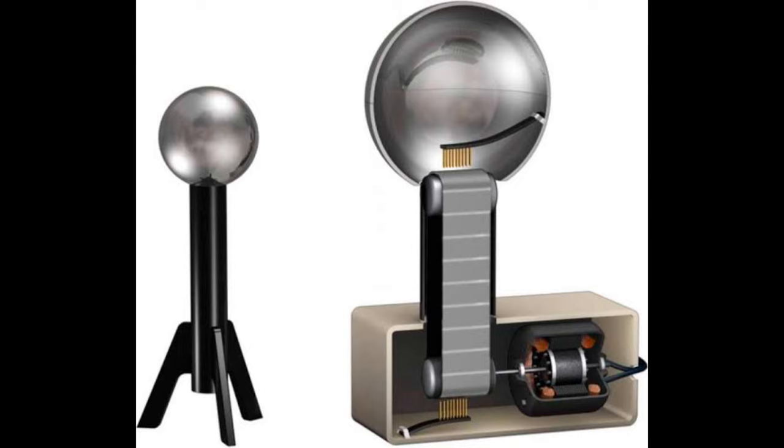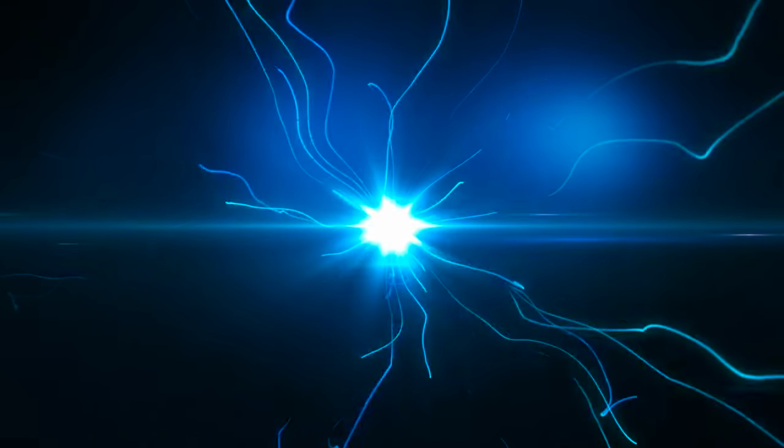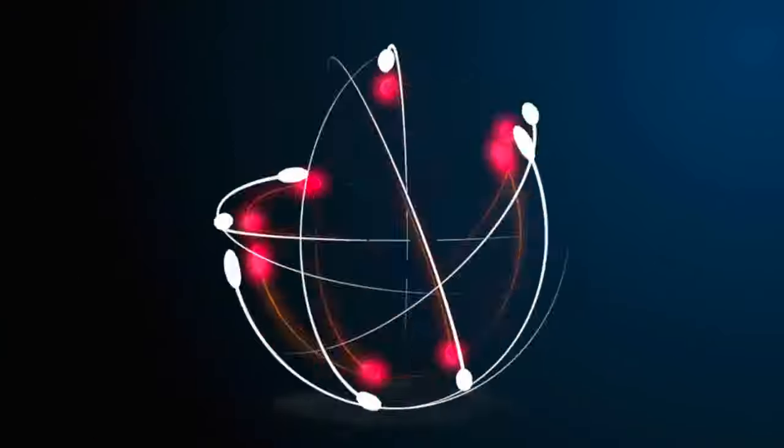Van de Graaff generator, high voltage generator. In 1931, R.J. Van de Graaff designed an electrostatic generator capable of generating very high potential of the order of 5 million volts, which was then made use of in accelerating charged particles so as to carry out nuclear reactions.